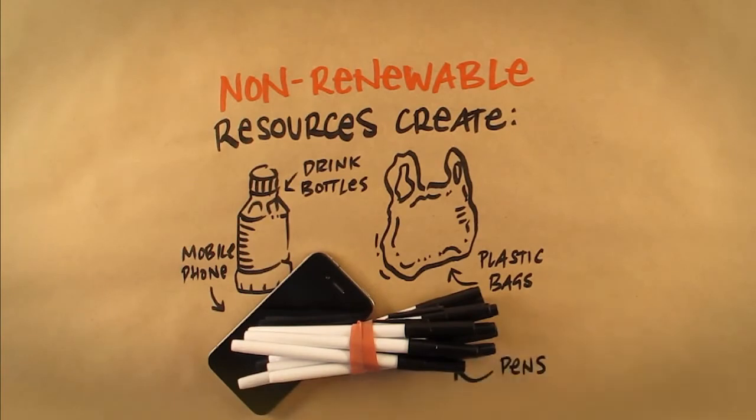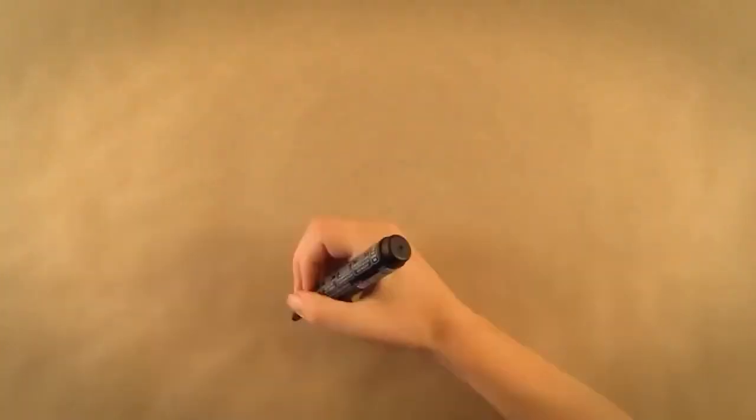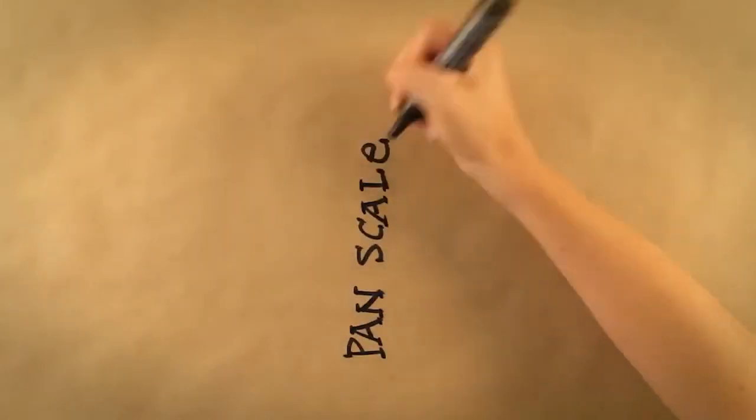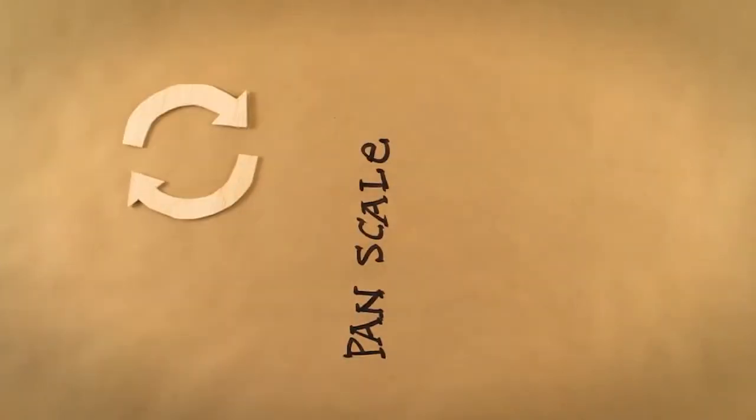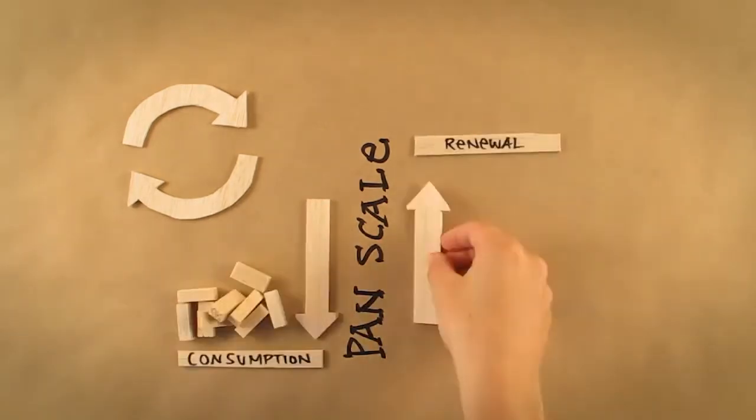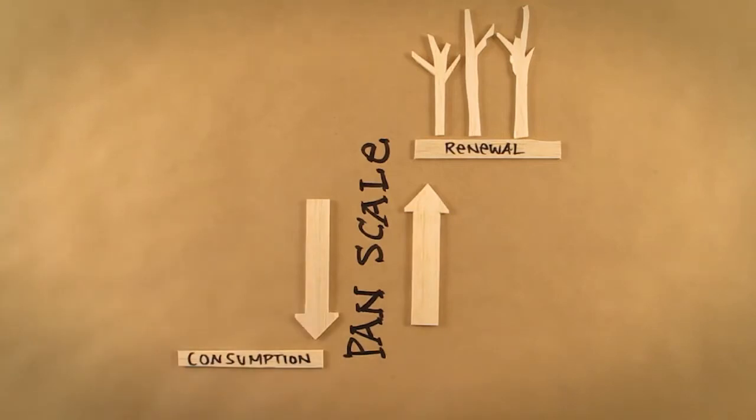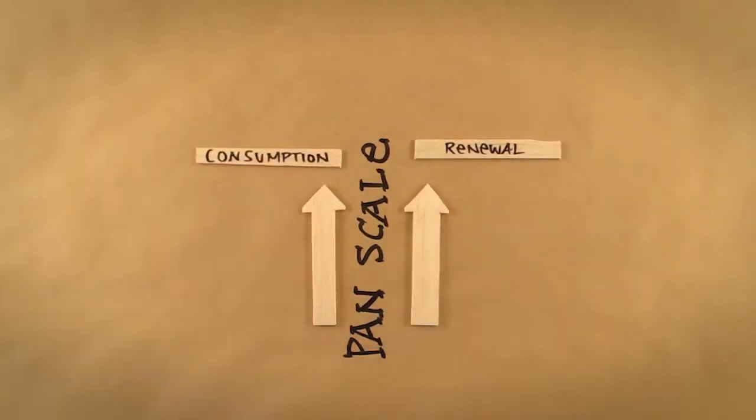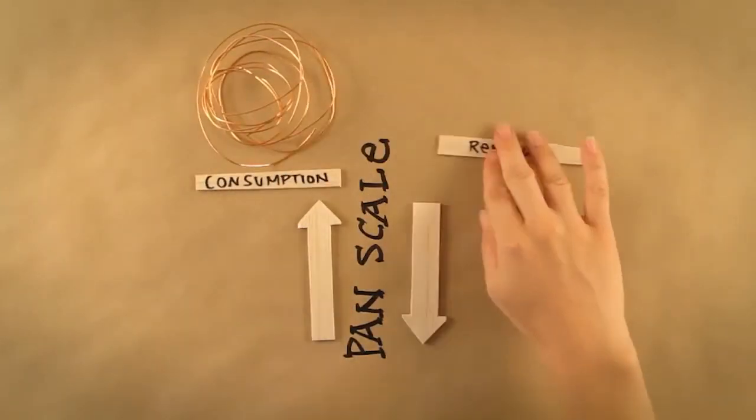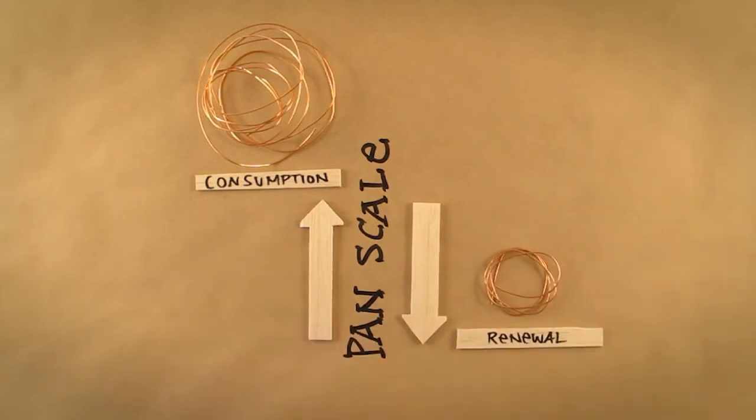A good way of remembering renewable and non-renewable is through what we call a pan-balance scale. For renewable resources, the pan-weight favors replenishment, representing consumption being less than the rate of renewal. In comparison, the pan-balance for non-renewable resources dips towards consumption, outweighing the rate at which they can be renewed, and therefore continuing to use them like we have is unsustainable.